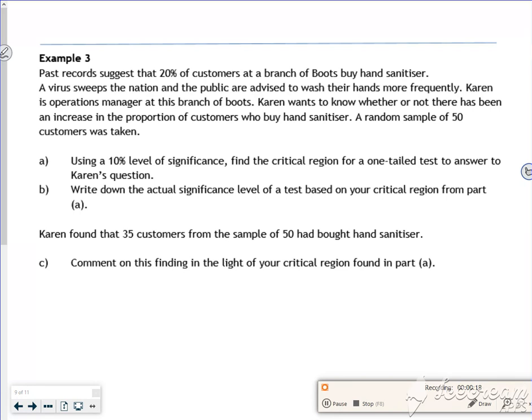Past records suggest that 20% of customers at a branch of Boots buy hand sanitizer, so P equals 0.20. A virus sweeps the nation, believe it or not, and people are advised to wash their hands more frequently. Karen wants to know whether or not there's been an increase in the proportion. So I'm looking at greater than. We have a sample of 50.